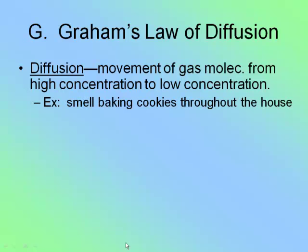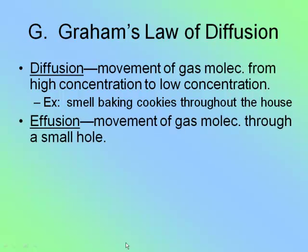A nicer example is baking cookies — you open the front door and you're hit with that smell because it moved from an area of high concentration in the kitchen to low concentration everywhere else. Now, effusion and diffusion tend to get mixed up — they are very similar. Effusion is also the movement of gas from high concentration to low concentration, but the difference is you're now moving through a small hole. For example, if I have a balloon and put a small hole in it, the gas that escapes through that hole is called effusing.